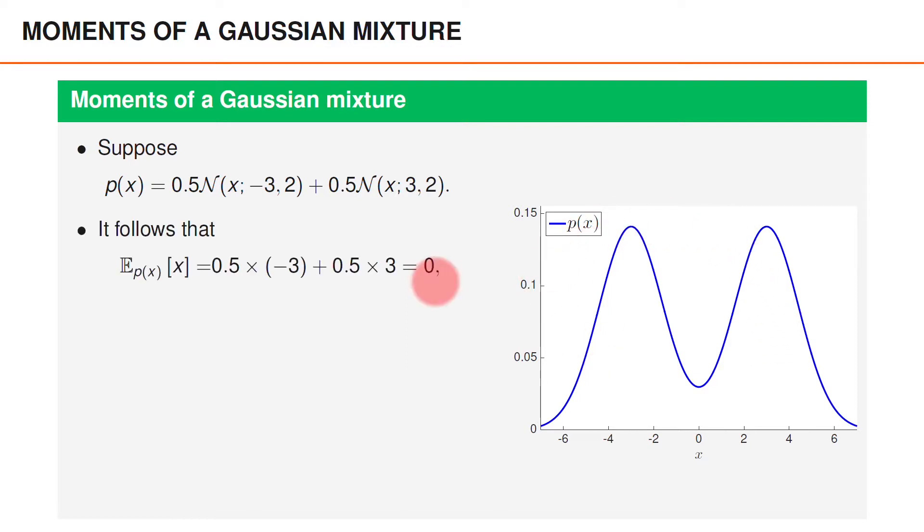According to the result on the previous slide, the expected value of x is then 0.5 times minus 3 plus 0.5 times 3 which is 0. Considering that x takes values around minus 3 and 3 with equal probability, it makes sense that the expected value is 0.